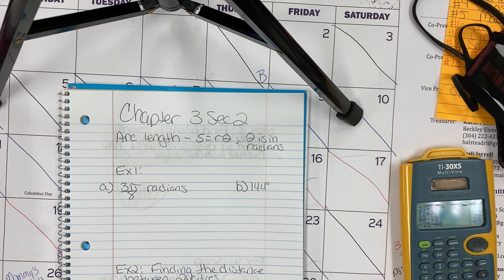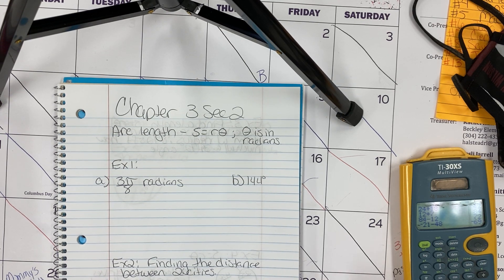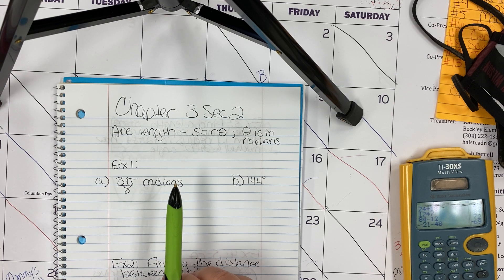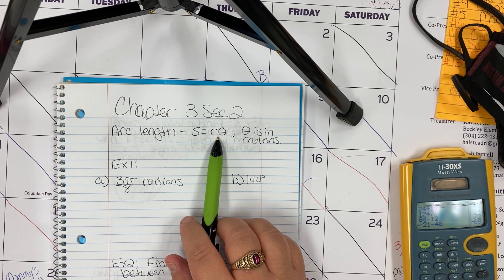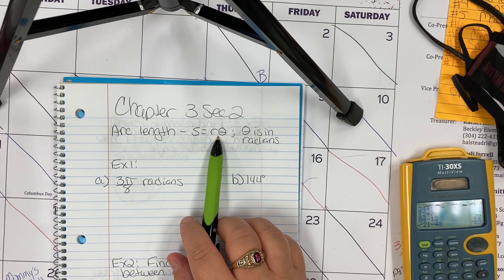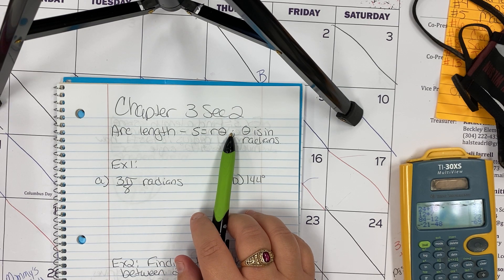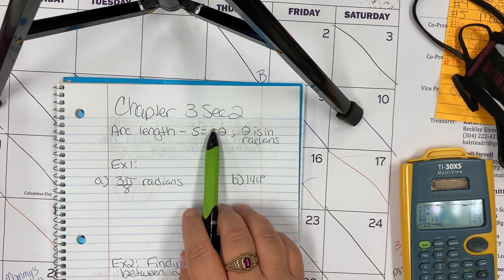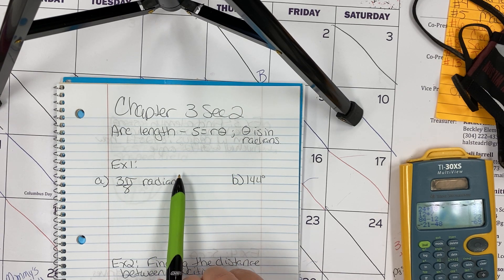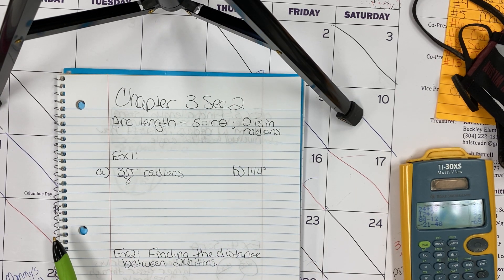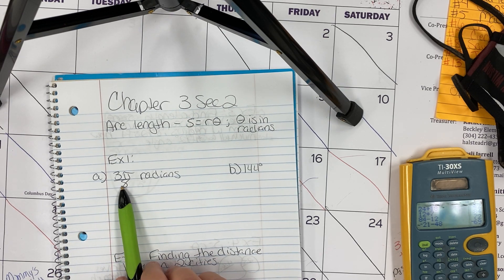Chapter 3 Section 2 for trig talks about arc length and area of a sector, mixing a little bit of geometry with the trig stuff that we know. Arc length of a circle: the length s of the arc intercepted on a circle of radius r by a central angle measure theta in radians is given by the product of the radius and the radian of the angle. So technically in easy terms, s equals r theta, and make sure your theta is in radians.